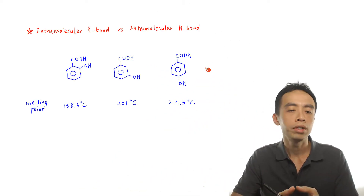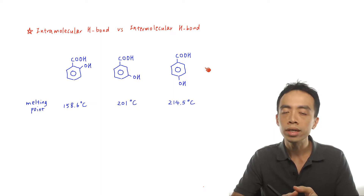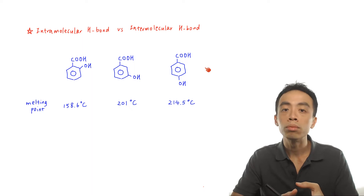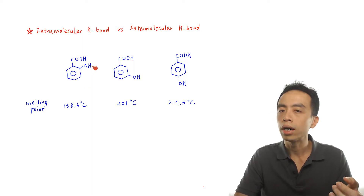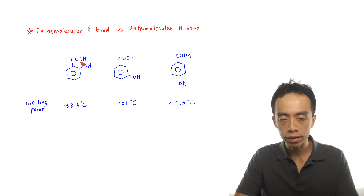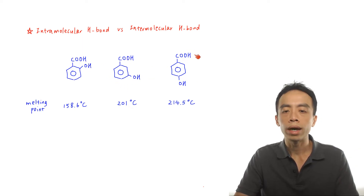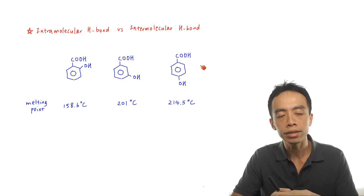What we have here are three isomers. They are all hydroxybenzoic acid but the hydroxy group is attached to a different position. The first compound will be 2-hydroxybenzoic acid, the next one will be 3-hydroxybenzoic acid, followed by 4-hydroxybenzoic acid.